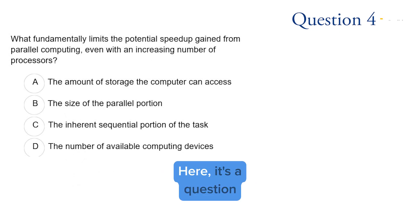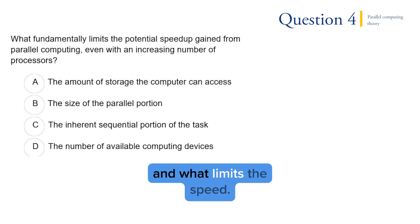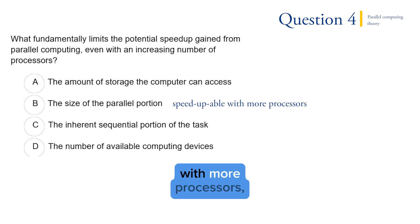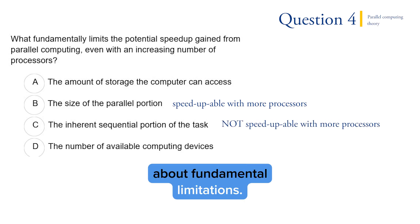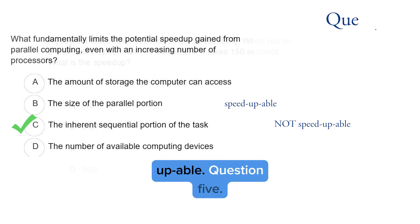Question four. Here it's a question about parallel theory and what limits the speed. You can speed up the parallel process with more processors, but you can't do that with the sequential portion. So this question asks about fundamental limitations, and that's sequential, because sequential cannot be sped up.